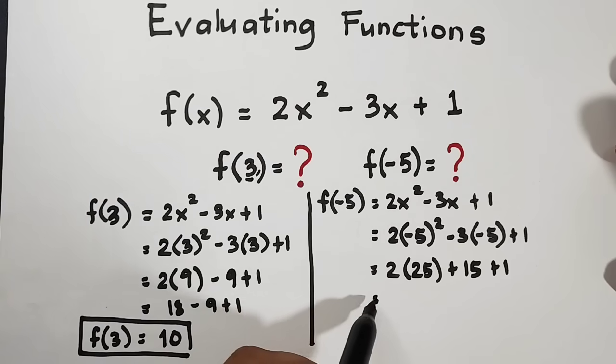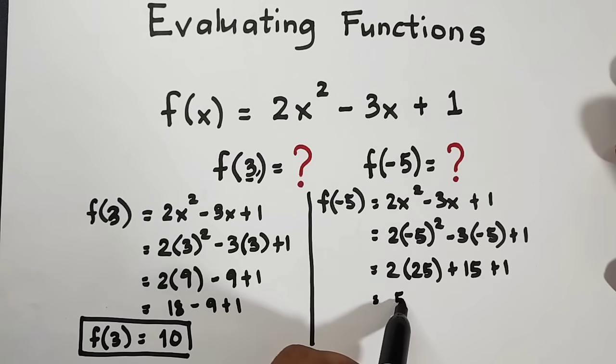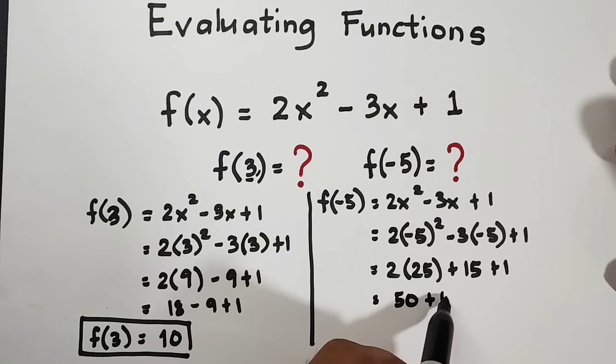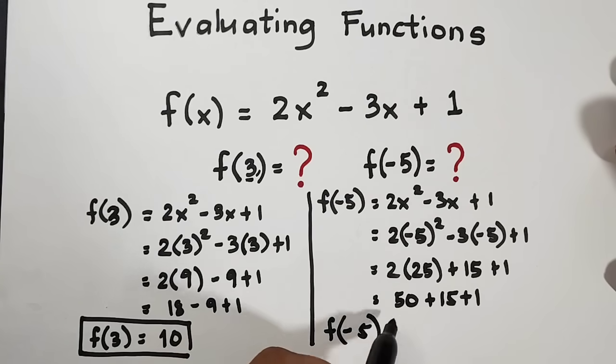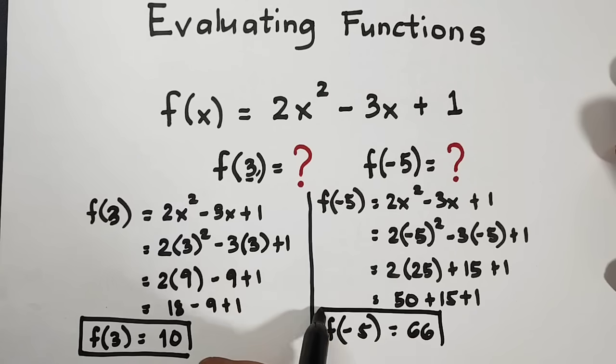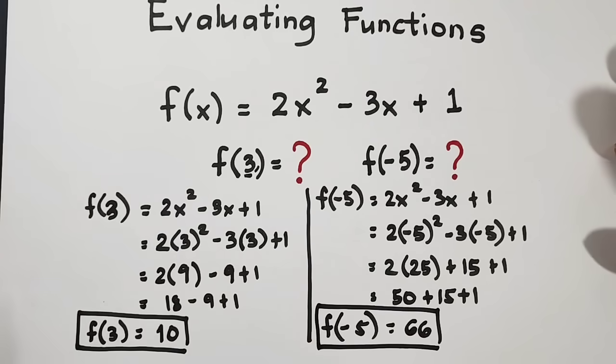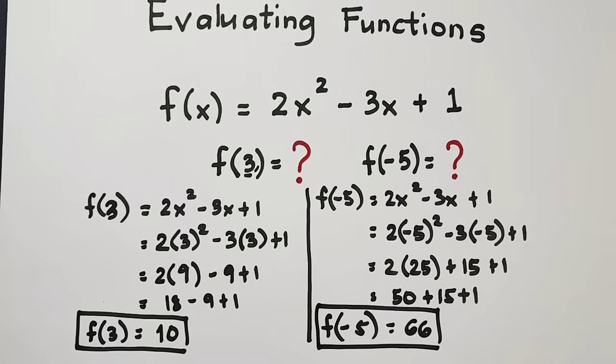Simplify this. 2 times 25 is 50 plus 15 plus 1. All in all, the evaluated value of f of negative 5 is 50 plus 15, that is 65, plus 1, that is 66. This is now the value of f of negative 5 given the original function.